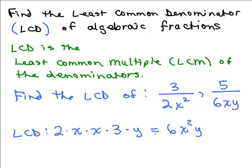That's a way of building up the least common denominator. Some people think of it slightly differently: they look at the numerical parts, the 2 and the 6, and ask what's the least common multiple of 2 and 6 — that's 6. Then for each different kind of variable factor, you take the one with the highest exponent. You've got X squared in the first denominator and only X in the second, so you take X squared. There's also a Y in the second denominator with exponent 1. So you get 6X squared Y that way as well.